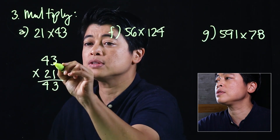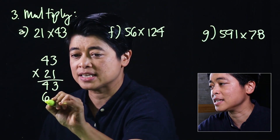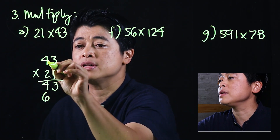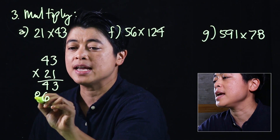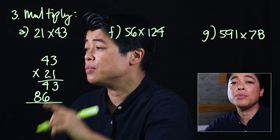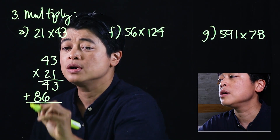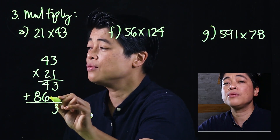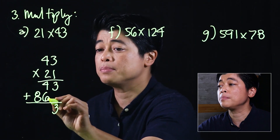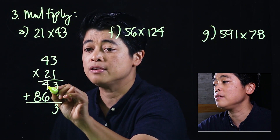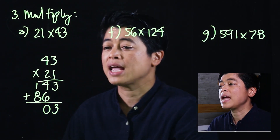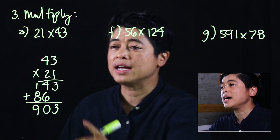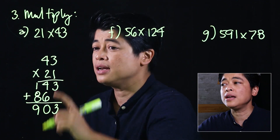Then we multiply the two in the tens place: two times three is six, placed one place over; two times four is eight. After multiplying, the process is to add. Three and nothing is three; six plus four is ten — carry or regroup; so the answer when multiplying 43 by 21 is nine hundred and three.